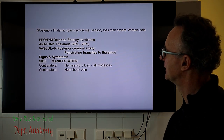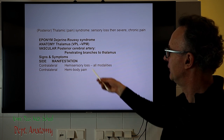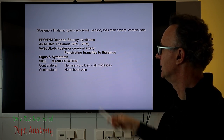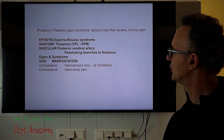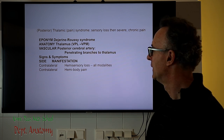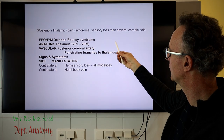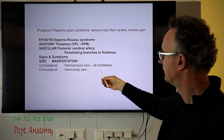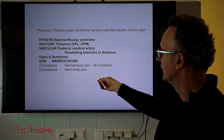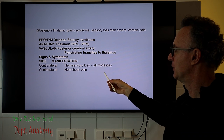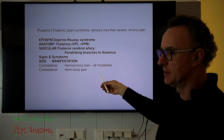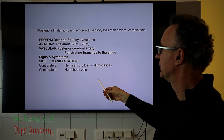Finally, I'd like to discuss thalamic syndrome, which is caused by occlusion of the penetrating branches of the posterior cerebral artery. These branches pass through the posterior perforated substance and supply not only the mesencephalon but also the posterior part of the thalamus. It is associated with a very special contralateral sensory loss for all modalities, and also contralateral hemibody pain. The problem is that we don't have any receptor stimulus for pain activation in this case, so we cannot use the usual treatment — it is a bigger challenge. Thank you very much.